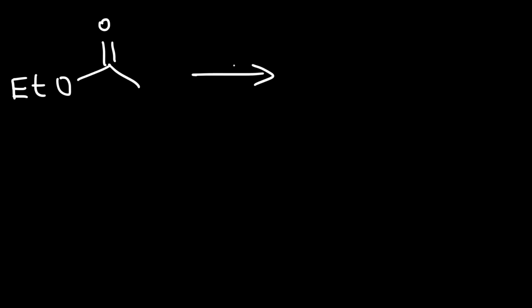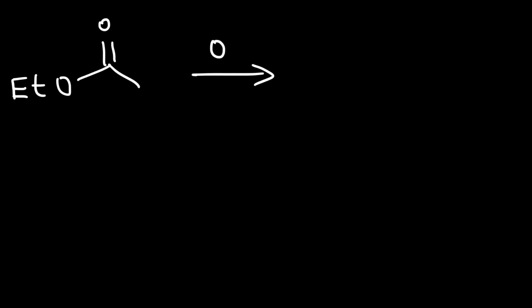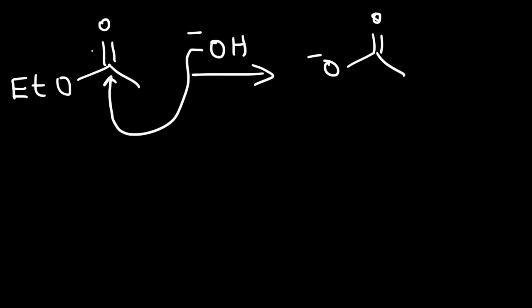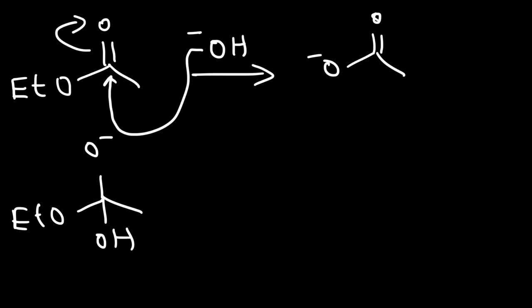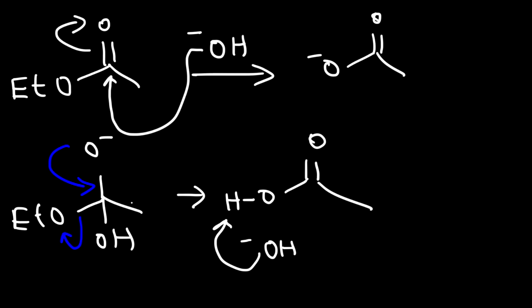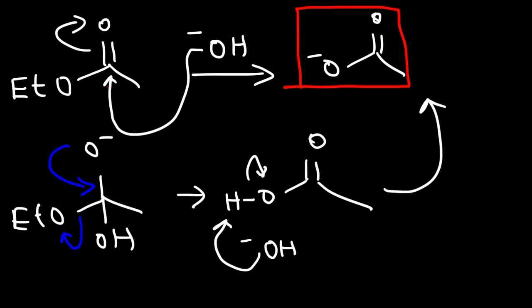Whenever you're dealing with the Claisen condensation reaction, you need to use the right base. Notice that we have an OEt group, therefore we need to use ethoxide as the base. Let's say if we chose to use hydroxide — this ester will hydrolyze into a carboxylate ion under basic conditions. Hydroxide can attack the carbonyl carbon giving us a tetrahedral intermediate, then this oxygen can form a pi bond expelling the ethoxide ion, giving us a carboxylic acid. Under basic conditions it won't last long and we get a carboxylate ion. So the use of hydroxide with the Claisen condensation is not going to give us the product we want.